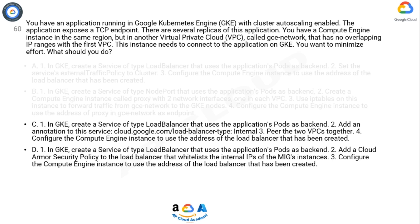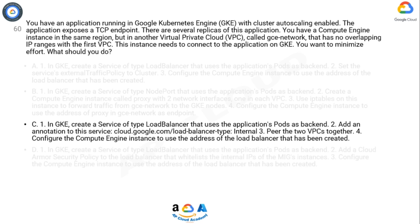Answer C performs VPC peering between the two VPCs. The statement confirms this option is feasible since it clearly specifies there is no overlapping between the IP ranges of both VPCs. It deploys the load balancer as internal using the annotation, and configures the endpoint so that the Compute Engine instance can access the application internally — without the need for a public IP at any time, and therefore without the need to go outside the Google network. The traffic never crosses the public internet.